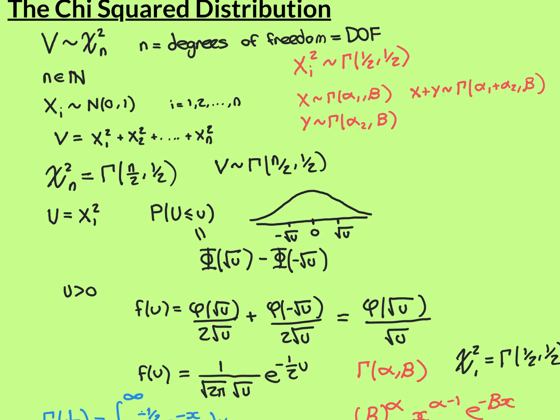We've done that first simple case, showing that chi-squared with one degree of freedom is the same as gamma of one half, one half, and that agrees with our general formula. Putting n equal to 1 gives gamma of one half, one half — so that's good. Now let's go to the general case with n degrees of freedom and show that the correct formula is gamma of n over 2, one half.